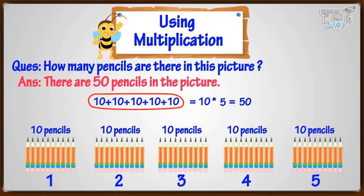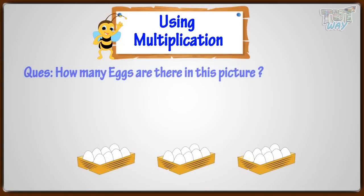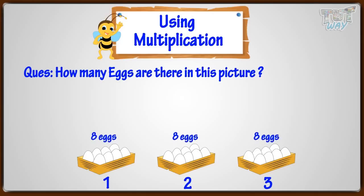Isn't it easier? Let's take one more example. Can you calculate how many eggs are there in this picture? Three trays are there and each tray has eight eggs. So, we need to add eight three times.